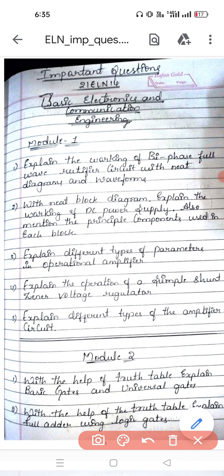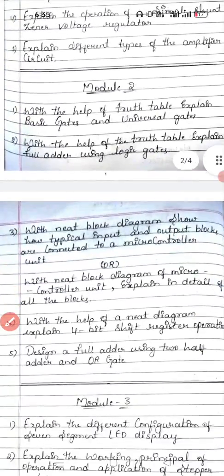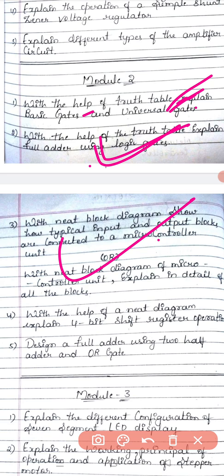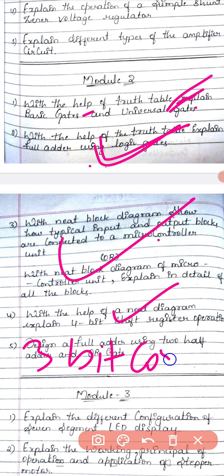Moving to the second module. In module two they will not change much. Basic gates and universal gate truth table are covered. With the help of a truth table, explain full adder — this is a very important question. Second definite question: with a neat block diagram show how typical input and output blocks are connected to a microcontroller. Third: 4-bit shift register is very important. Fourth: 3-bit counter — you should add this as a fifth question.